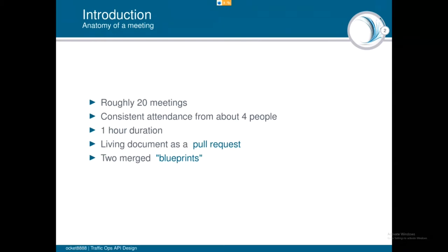So we started meeting in December. We've got consistent attendance from four people. We meet for just an hour to discuss a design document that lives as a pull request in my fork of the traffic control repo, which was a really nice way to collaborate because it lets people leave comments on lines that they think should be worded differently or taken out altogether on a line by line basis. So far, these meetings have resulted in two merged blueprints and one blueprint that was rejected and one that's out there in limbo right now. So that's our progress so far.